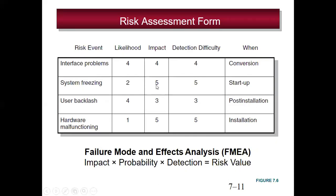The scale here works differently — 5 means the impact is not greater than one, while 1 means the impact is very much greater. For example, a score of 1 for hardware malfunctioning shows we can face that problem more frequently, whereas a score of 4 for user backlash represents a very low frequency of occurrence. We can set the scale in our own way.